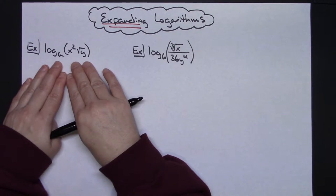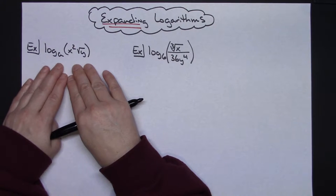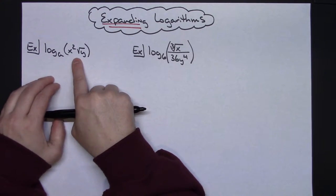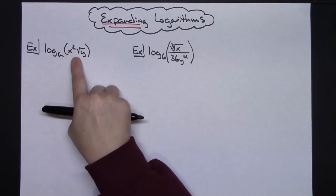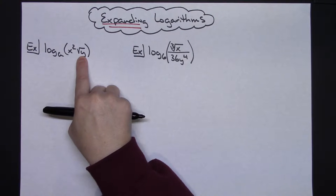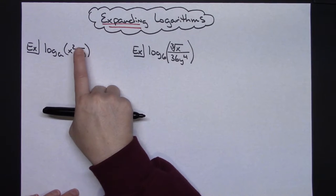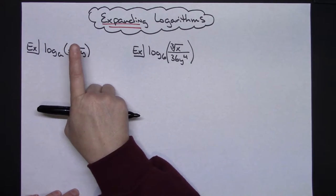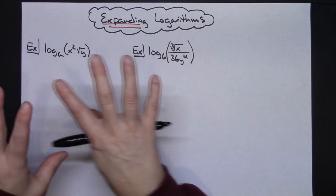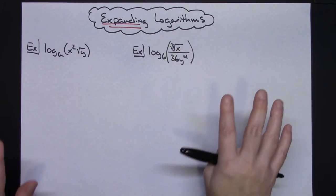In this first example I have a single logarithm and I'm going to expand it using the properties of logarithms. The first thing I'm going to do is look inside and see that I've got x squared times the square root of y — so it's a product going on there.